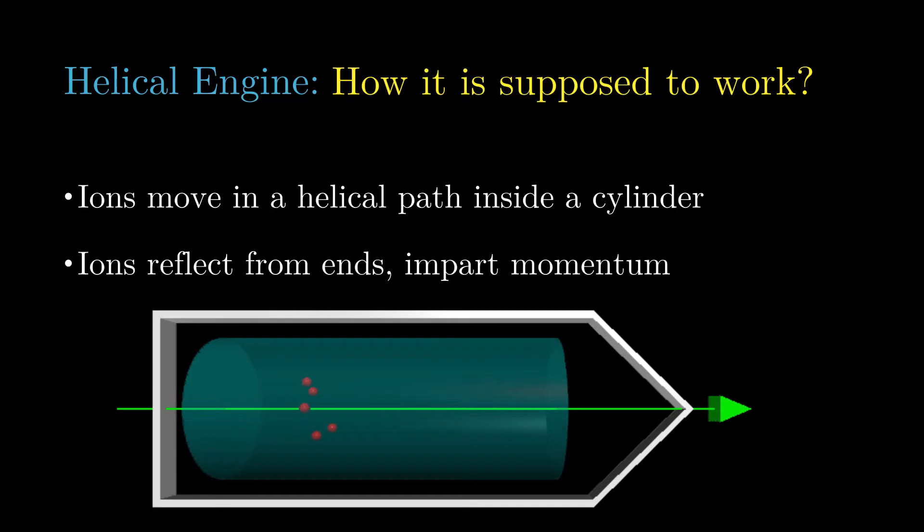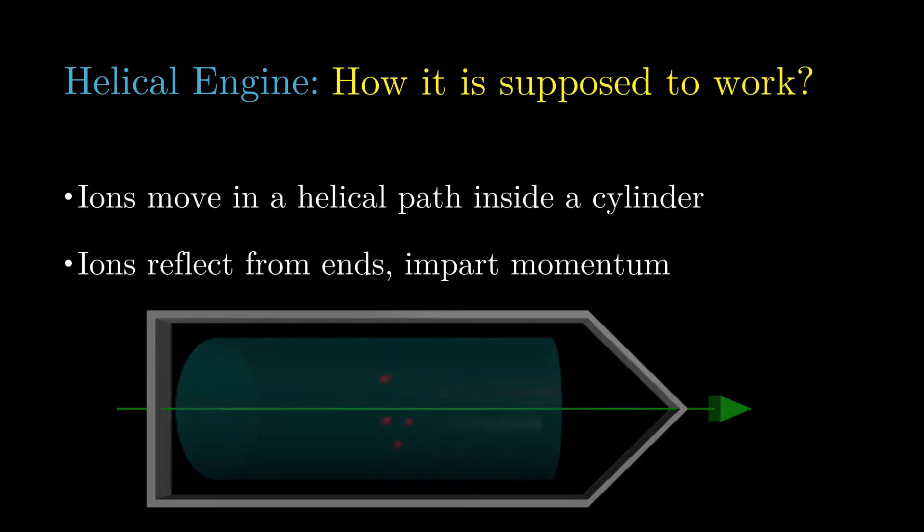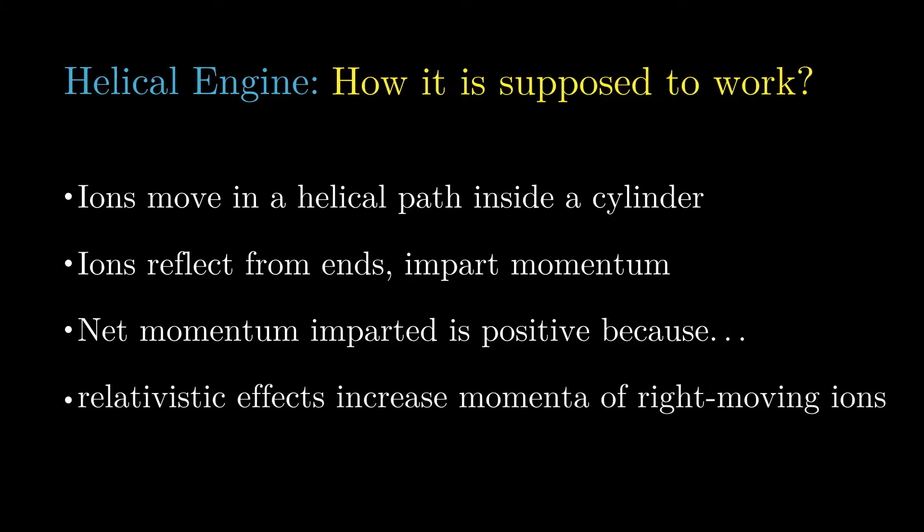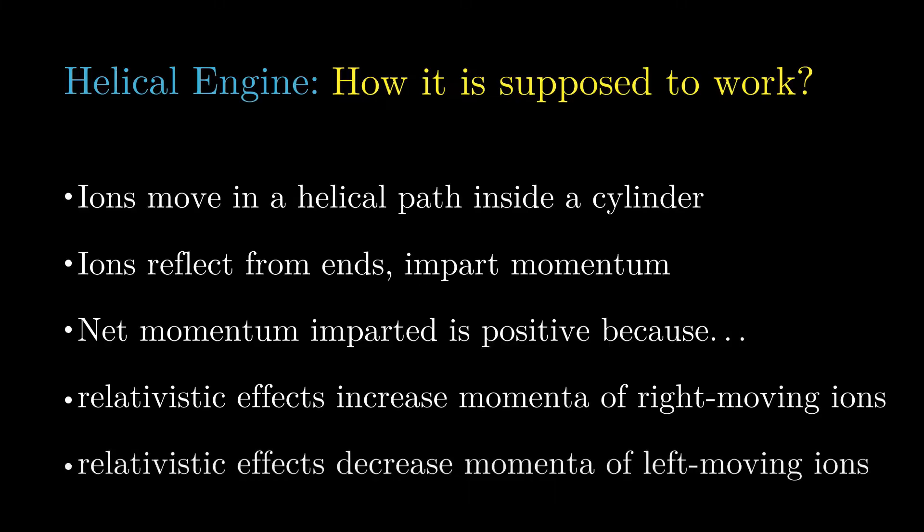For the helical drive to work, to produce a net thrust in the positive z-direction, the ions must have greater momentum when they hit the plus end of the cylinder compared to the minus end. Burns proposes to exploit special relativistic effects to increase the momenta of the ions as they move towards the plus end of the cylinder and decrease the ions' momenta as they move towards the minus end.